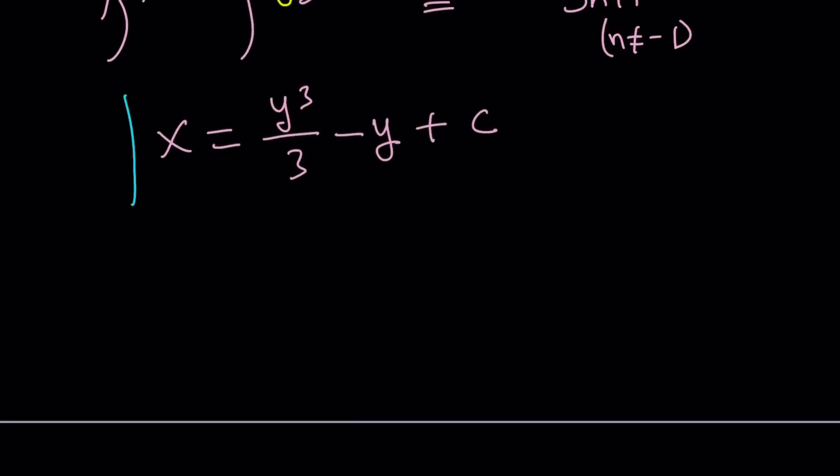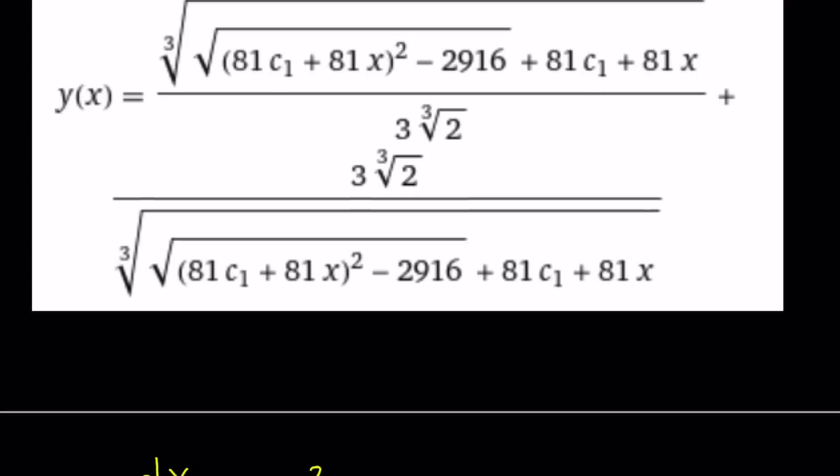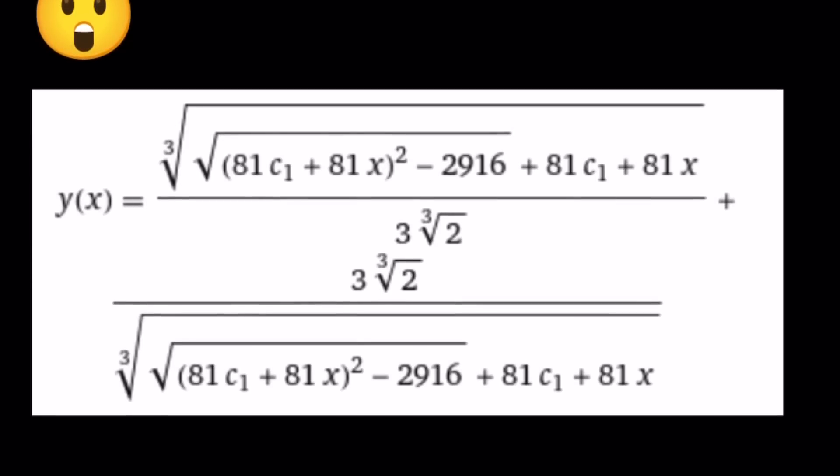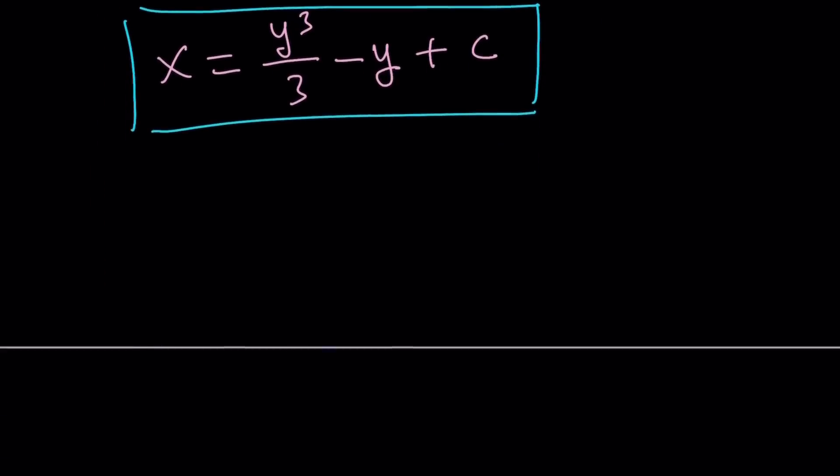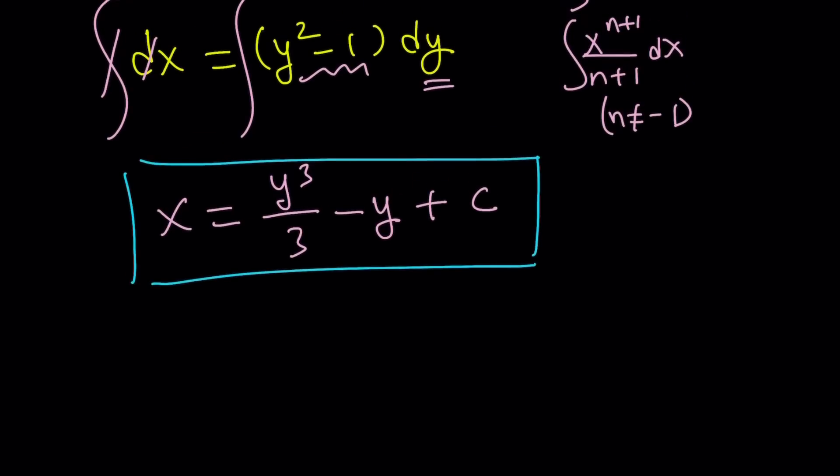But here's the thing. Some people might be curious about the solution from Wolfram Alpha. Why does it look like that? How were they able to get to y by itself? And as you can see, it's not very simple looking. So, here's what we're going to do. We're going to explore a little bit. Not the whole thing, but I just want to show you. And this is not always possible, by the way.